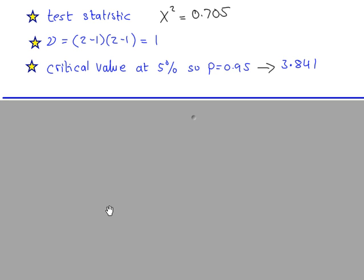From the chi-squared tables, because we have a 2 by 2 table, V, or the number of degrees of freedom, will be 1. In this question, we're working with a 5% significance level. So look at P equals 0.95, V is 1. That gives you this critical value.